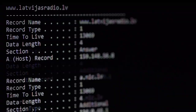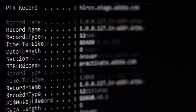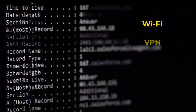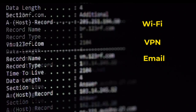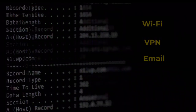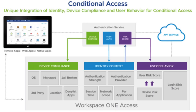Device configuration involves setting up and managing device settings remotely. This includes configuring Wi-Fi, VPN, email accounts, and other essential settings. For instance, VMware Workspace ONE Unified Endpoint Management, formerly AirWatch, allows IT administrators to push configurations to devices, ensuring they are set up according to company policies without requiring manual intervention, ensuring that all devices have consistent settings which can enhance security and productivity. By automating the configuration process, organizations can save time and reduce the risk of errors that might occur with manual setup.